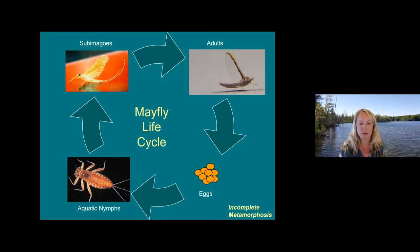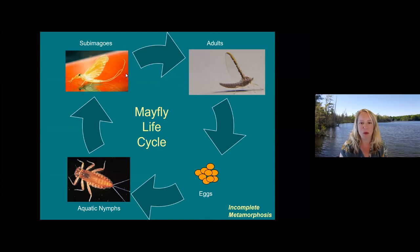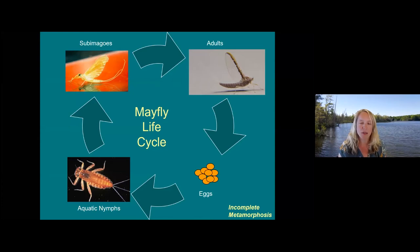Mayfly nymphs will first emerge as the subimago, which looks a lot like an adult but actually has one more molt to go. I've had that happen on my sleeve — you're out on the shoreline and these mayflies are hatching, they'll land on any surface including you, shed a skin one more time, leave that on you, and then they're adults looking for a mate. There are a few aquatic insects that are aquatic their entire lives, including some of the beetles and true bugs, but most have a terrestrial stage as well.